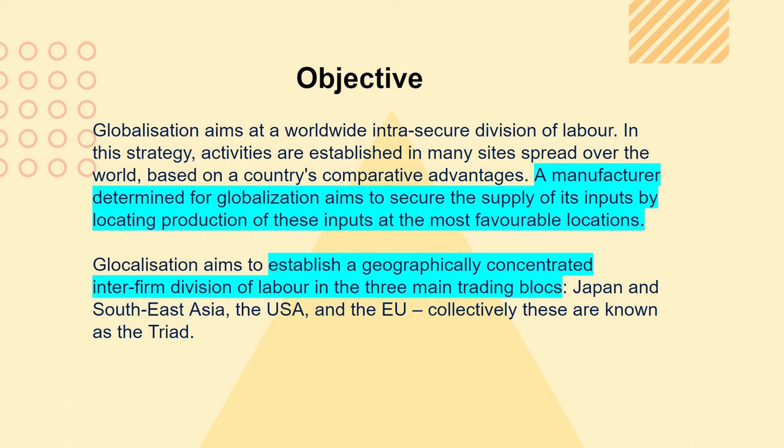Globalization aims to establish a geographically concentrated inter-firm division of labor in the three main trading blocs: Japan and Southeast Asia, the USA, and Europe. Collectively, these are known as the triad. Manufacturers striving for globalization build their comparative advantage on close interaction with suppliers and dealers, as well as with other relevant actors such as banks and governments. As one man said, a T-shirt tells a story of globalization.